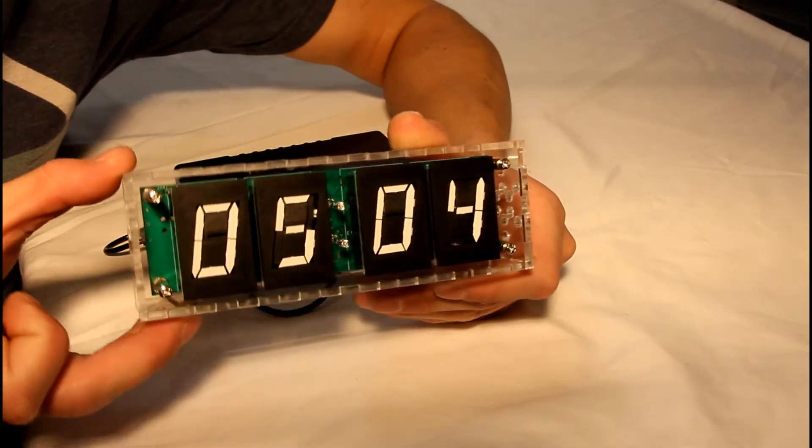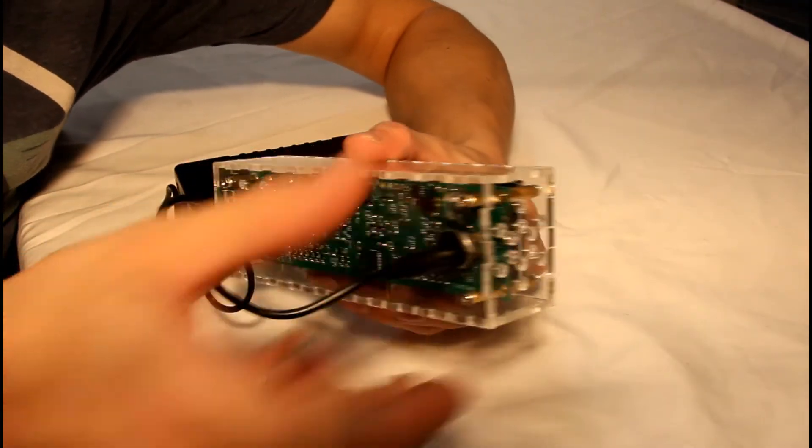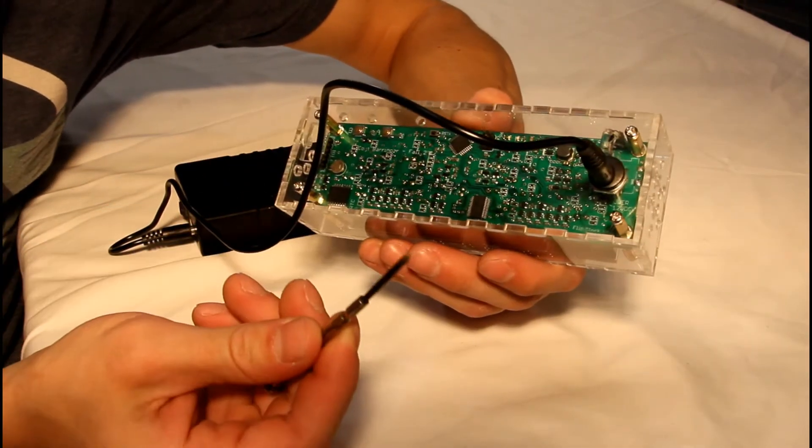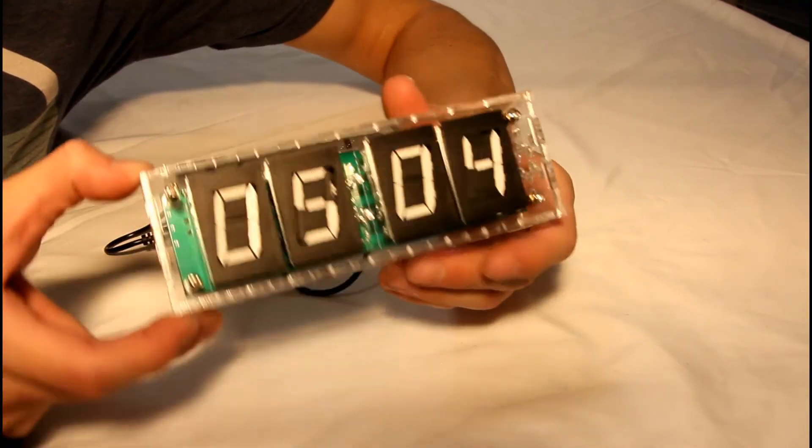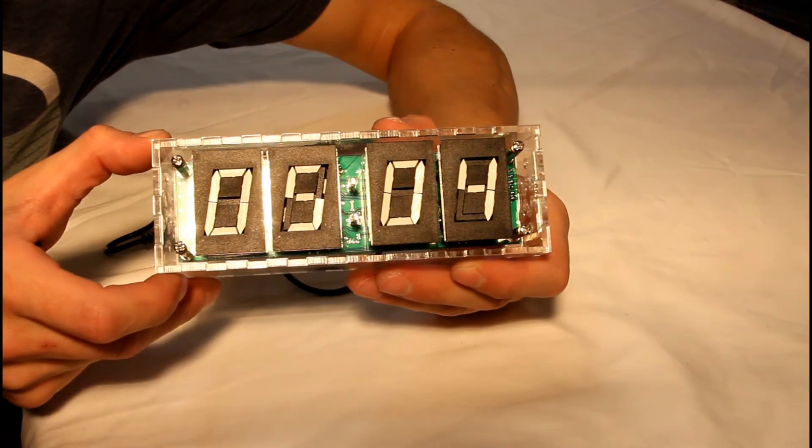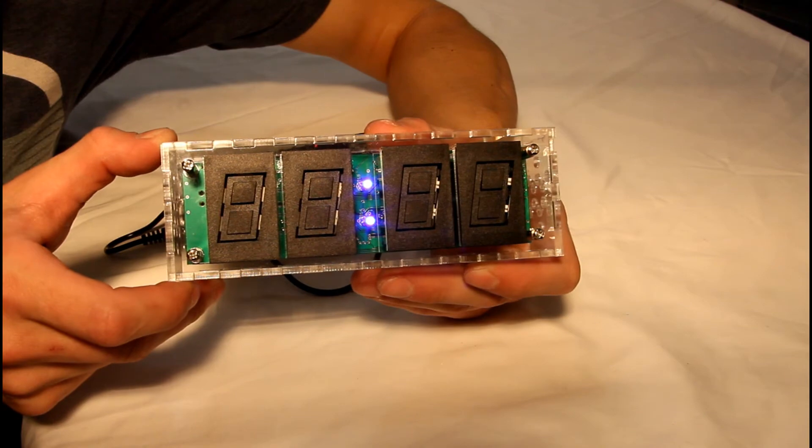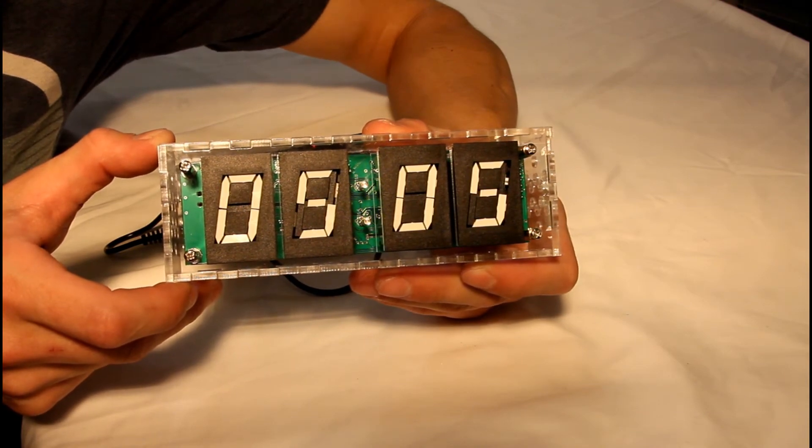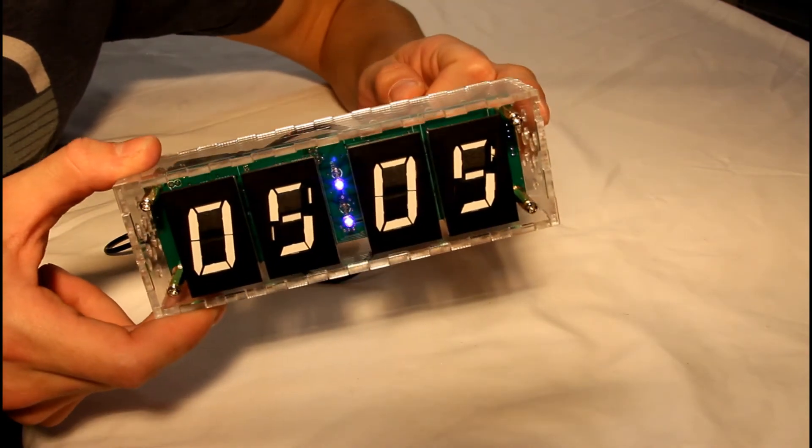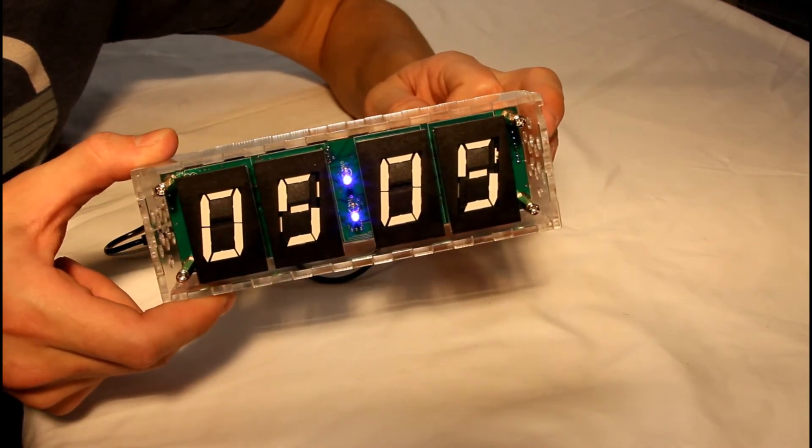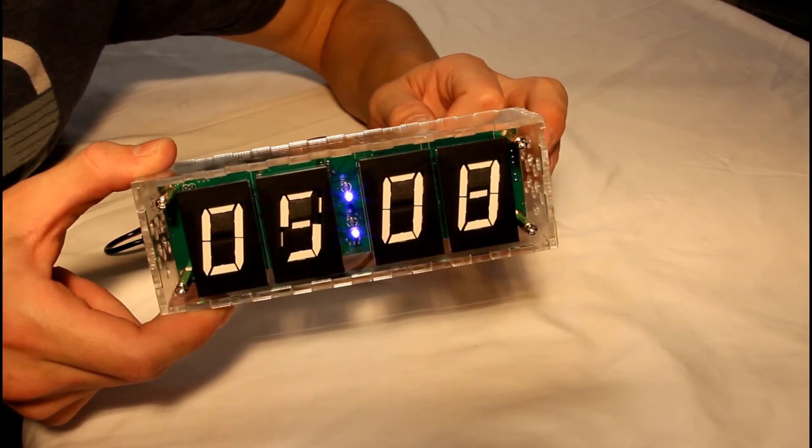All right, we're going to try to set the time on the flip digit clock. Just so you can see the workings, you need a small screwdriver. I'm going to turn on the system. It's going to boot up. And if we want to increment, I believe this will increment minutes, but it might be the hours. Yep, that's the minutes.